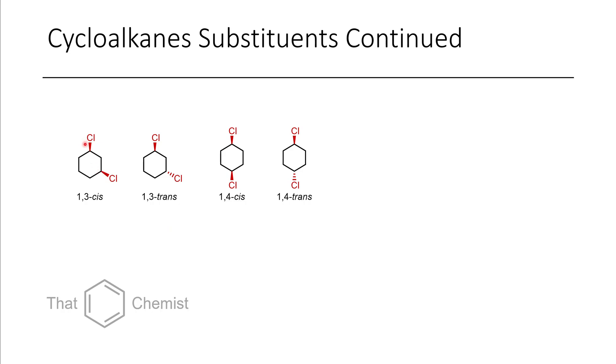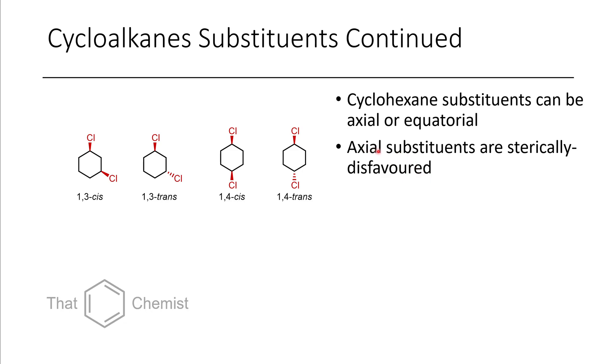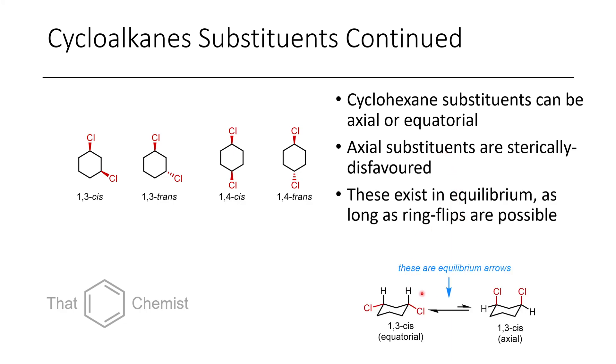If you have substituents in the 1-3 position, if you draw them in the flat way, this would be cis. If you draw them like this, it would be trans. 1-4 would be cis like this, and trans like this. You can have substituents that are axial or equatorial. Axial substituents are sterically disfavored because they pop up against each other, and hydrogens are typically smaller. Hydrogens would prefer to be the ones in the axial position over something larger like a chlorine. We have these in equilibrium, usually. This is 1-3-cis dichlorocyclohexane. This is not present very much of the time, but most of the time it's in the equatorial form.